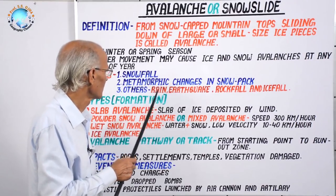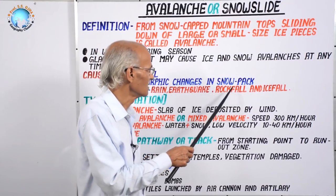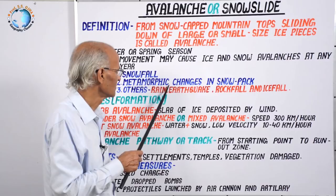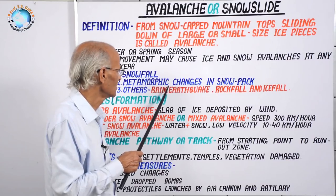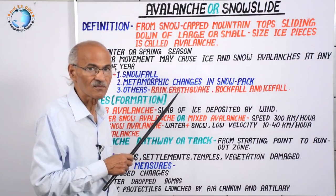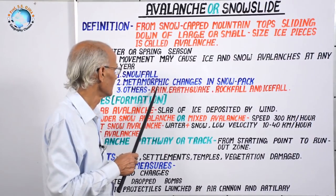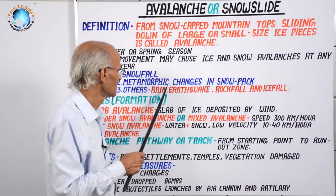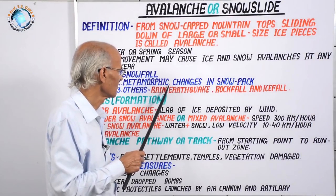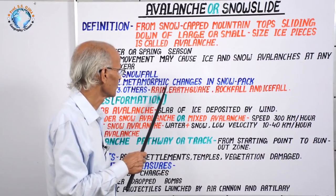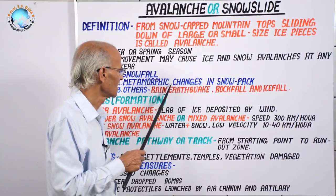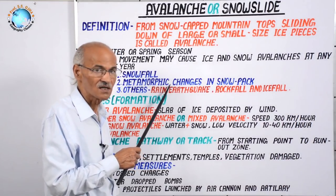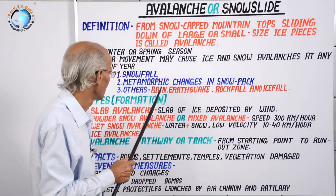The second cause is metamorphic changes in the snowpack. When there is snowfall and the layer of snow becomes thick, due to its pressure the bottom ice melts — this is called metamorphism — and the water from that molten ice cannot support the weight of the thick layer of ice above. As a result, the piece of ice slides down, and this is called avalanche.